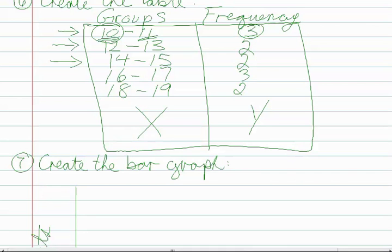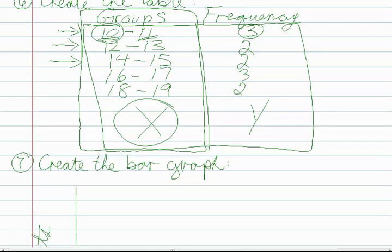Now generally in grouped frequency tables, the first column, this column here, is usually the column which is used on the x-axis. Usually, but I have seen cases where it's not true.